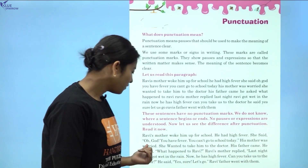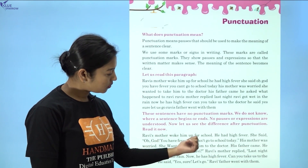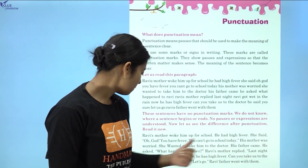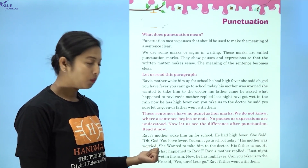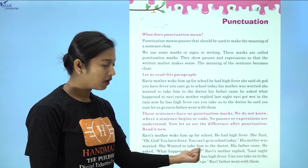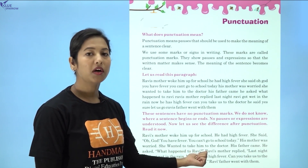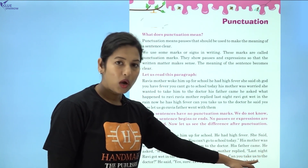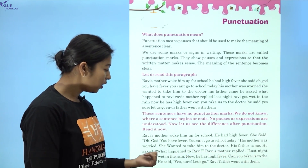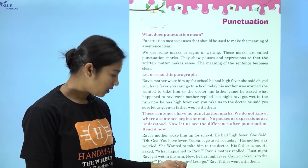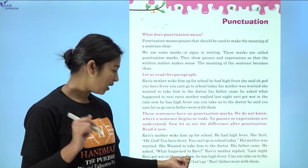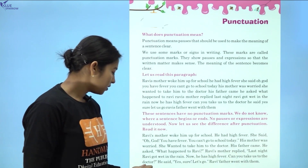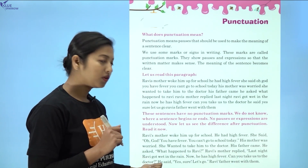His mother was worried — full stop. She wanted to take him to the doctor — full stop. His father came — full stop. He asked — comma — inverted comma open. What happened to Ravi — question mark — inverted comma closed. Ravi's mother replied — comma — inverted comma open. Last night Ravi got wet in the rain — full stop. Now — comma — he has high fever — full stop. Can you take us to the doctor — question mark — inverted comma closed.